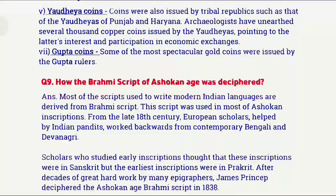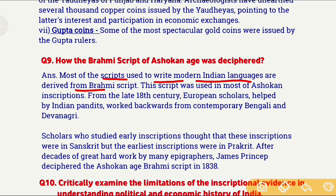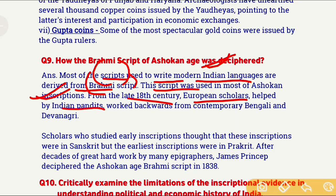Question number 9: How was the Brahmi script of the Ashokan age deciphered? The Brahmi script was used to write Ashokan inscriptions. Most scripts used to write modern Indian languages are derived from Brahmi script. From the late 18th century, European scholars took help from Indian pandits and analyzed Bengali and Devanagari scripts of the current period. Since modern Devanagari and Bengali scripts are derived from Brahmi, scholars analyzed and studied these modern scripts to decipher the Brahmi script.